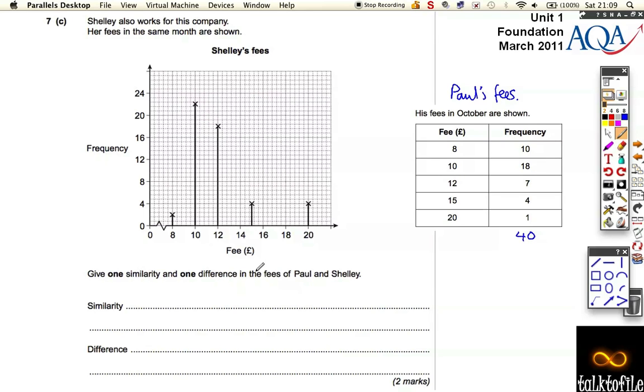So give one similarity and one difference. Well, there's lots of different things you can write as long as they're correct. Well, you can see that Shelly's most common fee was also 10 pounds. So one similarity is Shelly's most common fee was 10 pounds. So mode equals 10 pounds for both. That's one similarity.